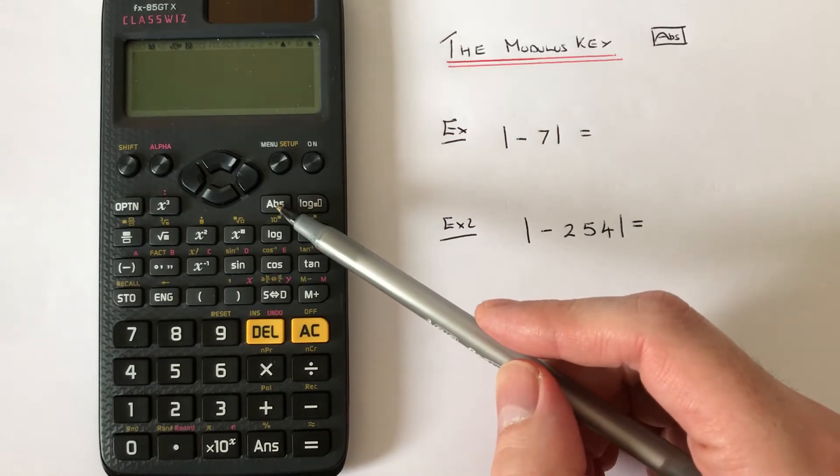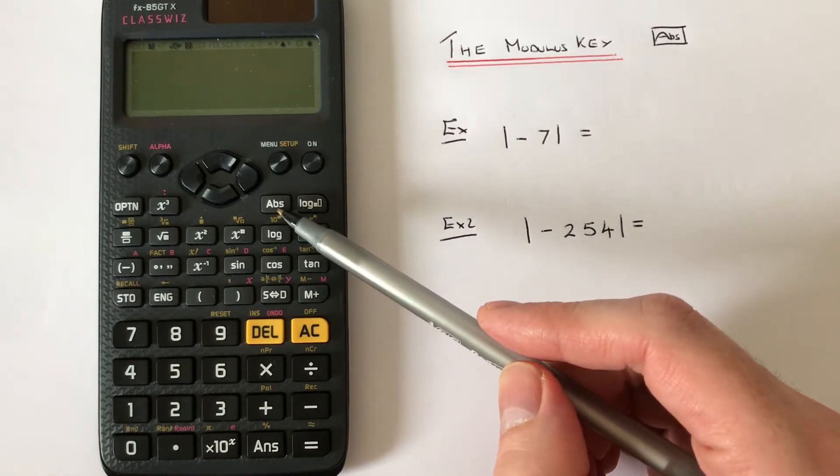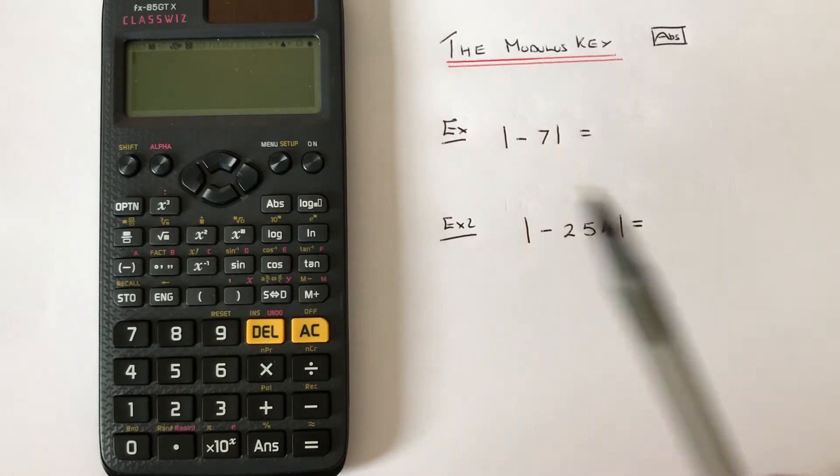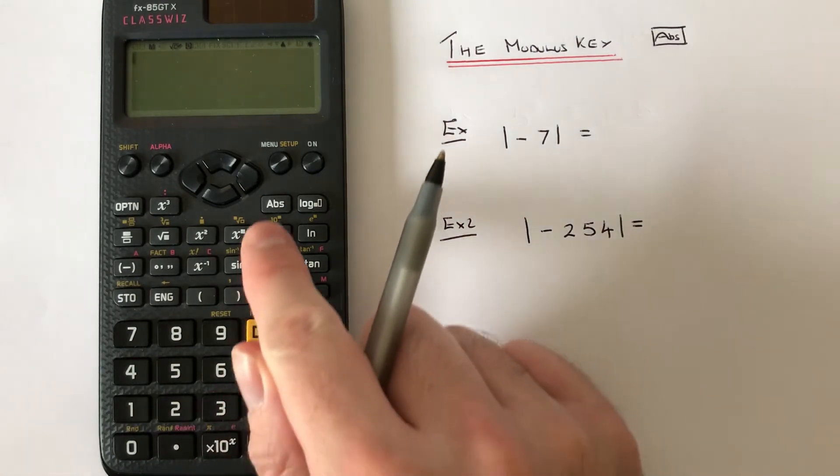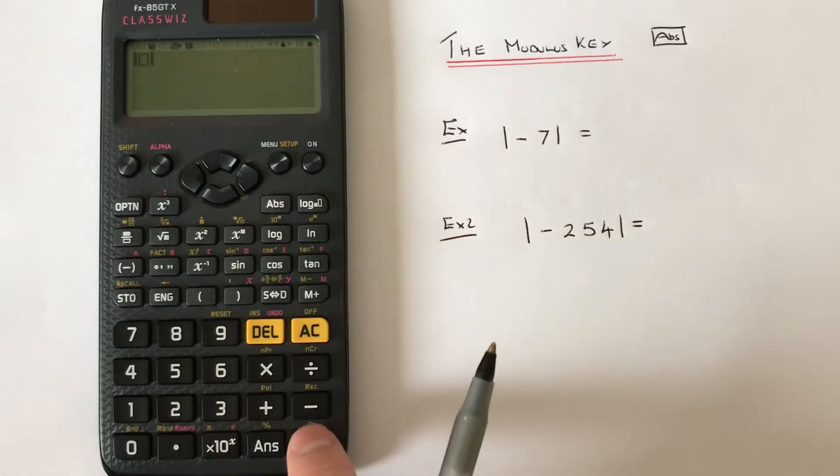It's this key here with the ABS on it. Okay, so let's have a look then at working out the modulus of minus 7. If you press ABS and then type in minus 7, so take away 7.